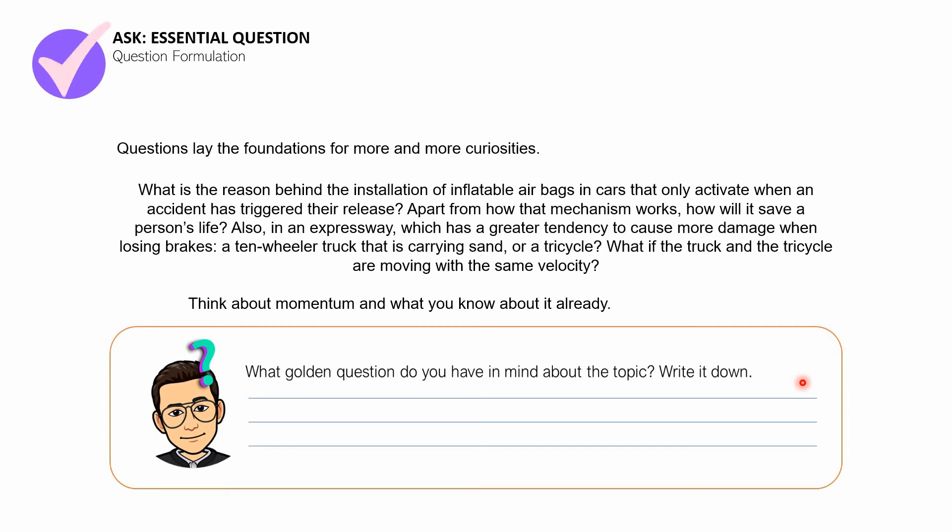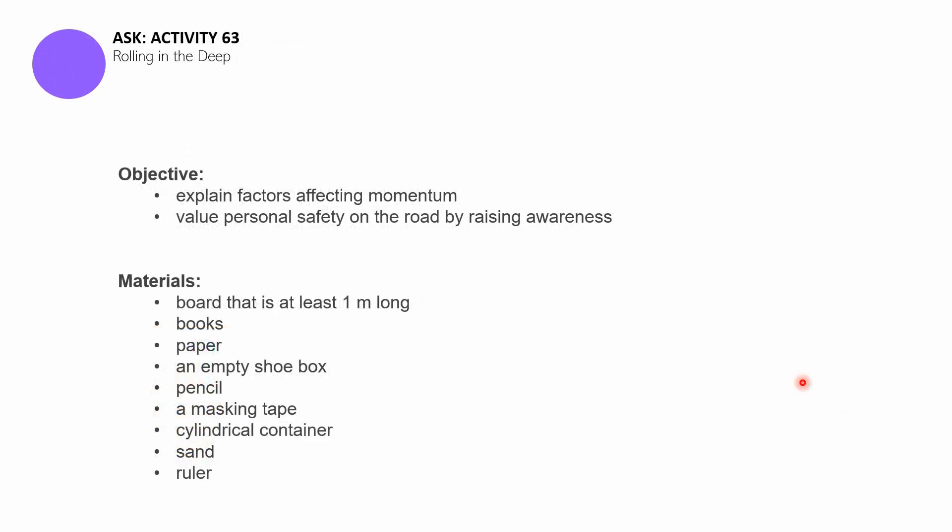That concludes the first part of this discussion. Let's now move on to the second part of this session, which is Activity 63, Rolling in the Deep. We have two objectives for this activity. The first one is for us to be able to explain different factors affecting momentum. And then the second and last objective is we have to be able to value personnel safety on the road by raising awareness.